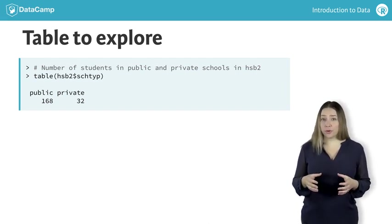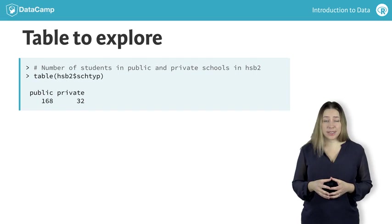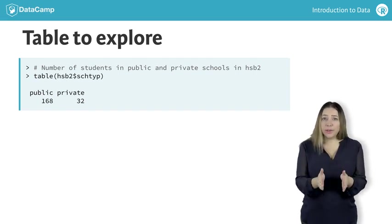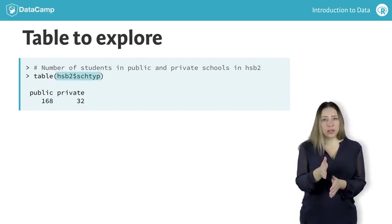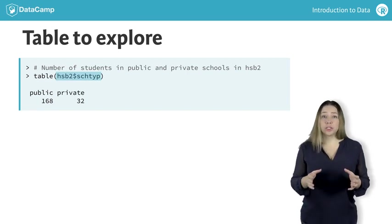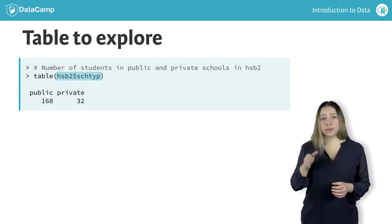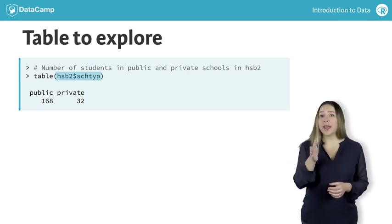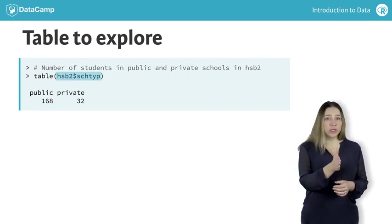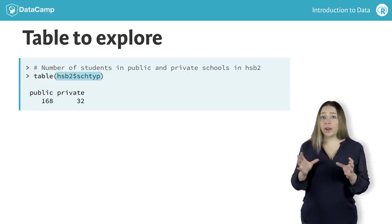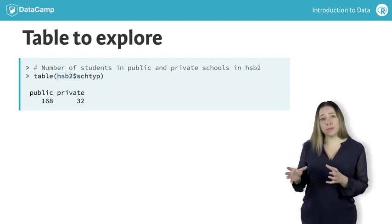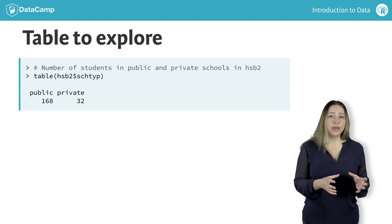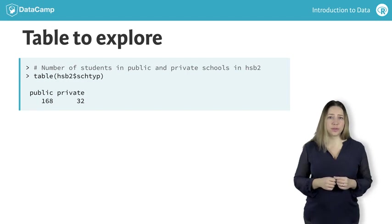A quick refresher on R syntax: we refer to a column in a data frame as name of data frame, dollar sign, name of column. So here we use table of hsb2 dollar sign school type. There are 168 students in public schools and 32 in private schools.